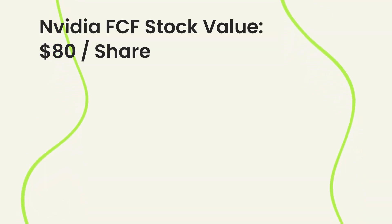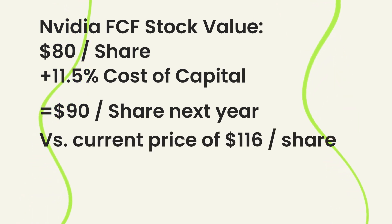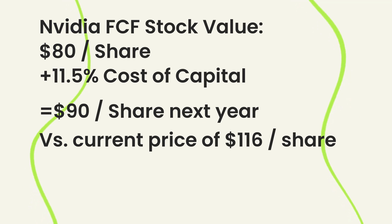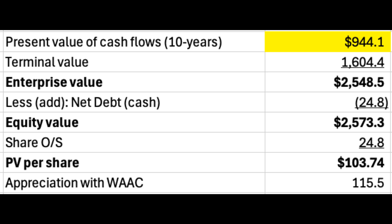Assuming the stock will continue to appreciate at the cost of capital, next year that would be about $90 per share. The stock is currently trading at about $116 per share — clearly not undervalued, but not crazy overvalued either. We can also figure out what's implied by the stock price. For example, if we took our long-term growth estimates up to 20% for that 10-year period — because we're confident NVIDIA's GPUs will replace most data processing needs from CPUs — and assume it can capture a huge market, then our DCF shows more of a $115 type share price, implying investors expect at least about 20% long-term growth.